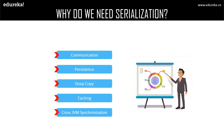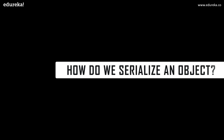The final and most important reason for using serialization is cross JVM synchronization. The major advantage of serialization is that it works across different JVMs that might be running on different architectures or operating systems. With this, let us continue with our next topic: how do we serialize an object?